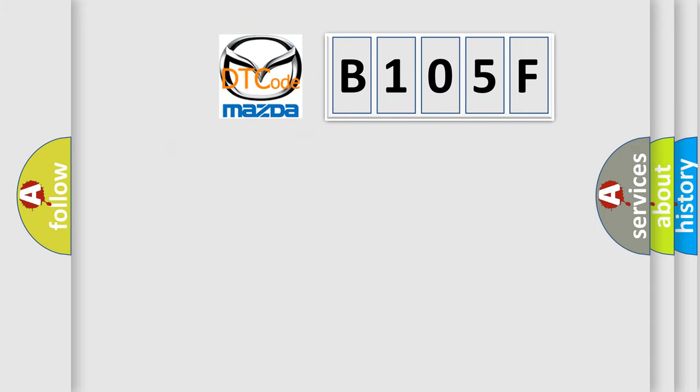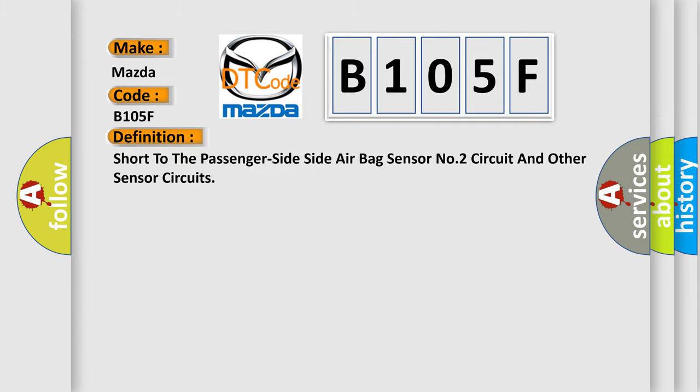So, what does the diagnostic trouble code B105F interpret specifically for Mazda car manufacturers? The basic definition is short to the passenger side side airbag sensor number two circuit and other sensor circuits.